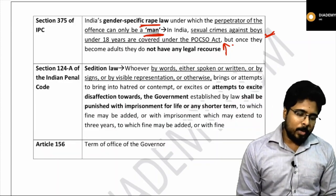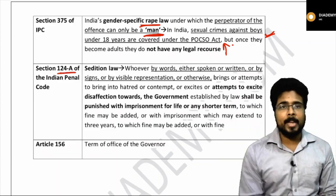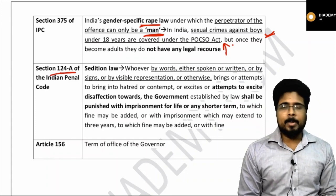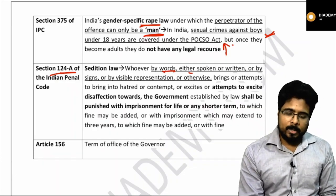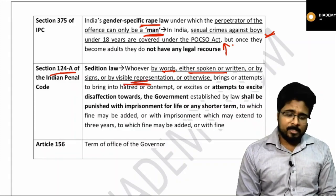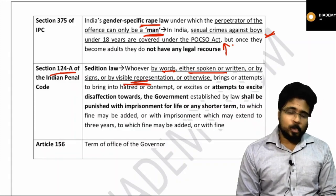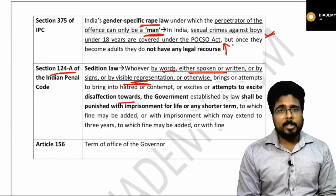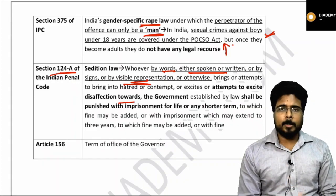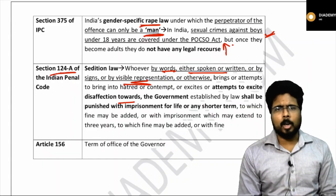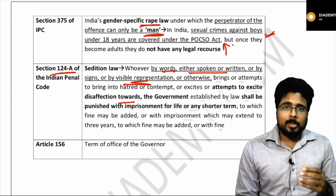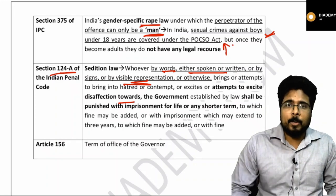Section 124A of the Indian Penal Code talks about sedition. Sedition means either by words, spoken or written, or by signs, visual representation, or any other means, if someone attempts to excite disaffection towards the government established by law, they shall be punished with imprisonment for life or any short term, depending on the intensity of the crime committed.